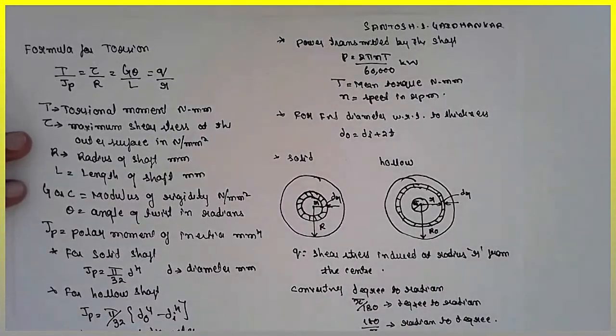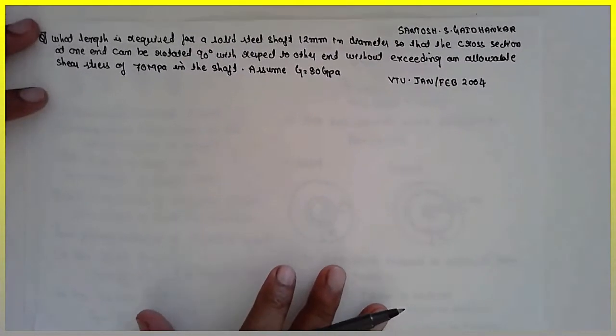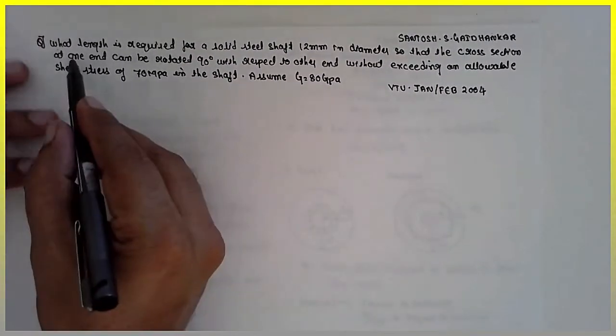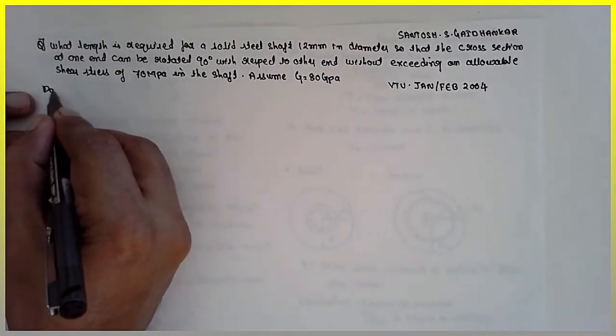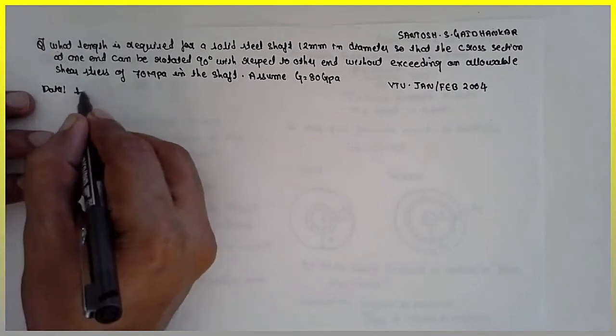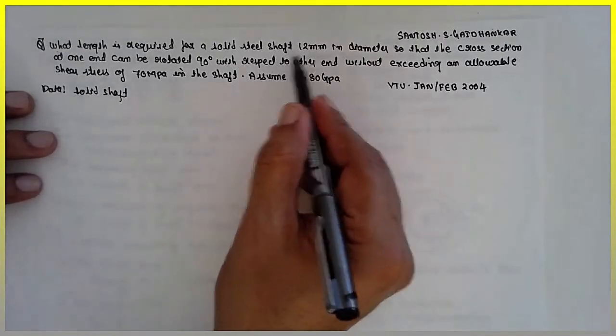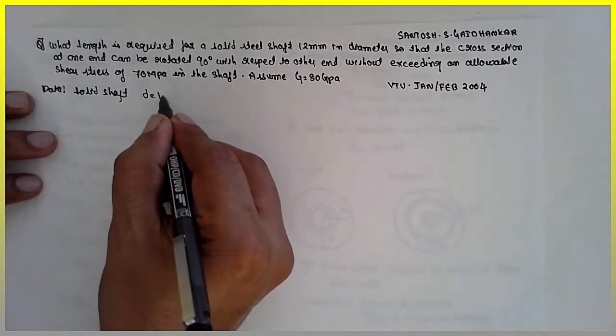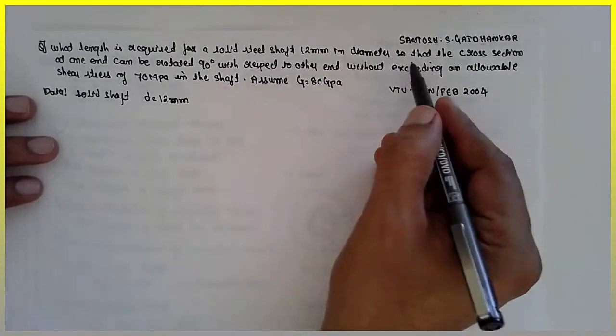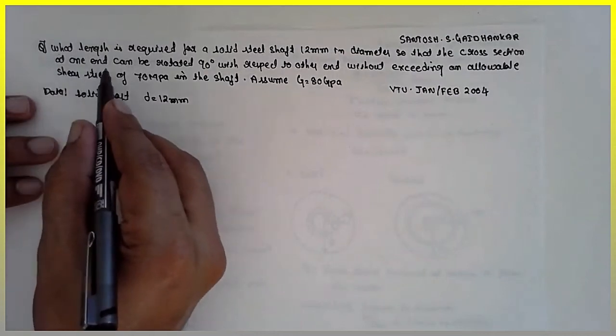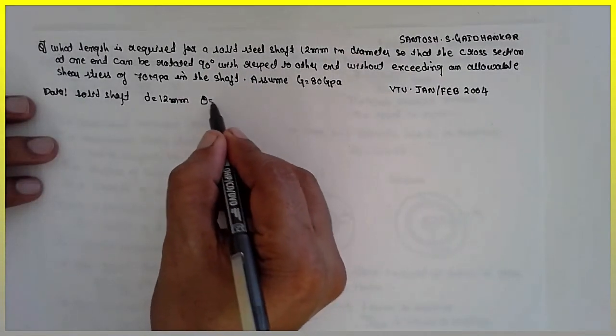This is the first problem. What is the length required for a solid steel shaft, first it is solid, it is a solid shaft, diameter is 12 mm. So that the cross section at one end can be rotated 90 degree, this theta is given, theta is equal to 90 degree.